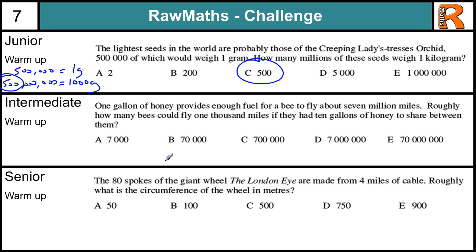Intermediate warm-up. If one gallon of honey provides one bee with the ability to fly 7,000,000 miles, then how many bees could fly 1,000 miles on one gallon? So if one bee can fly 7,000,000, how many bees can fly 1,000? Well, you should be able to see that 7,000 bees can fly 1,000 miles on one gallon. But we've got 10 gallons. So 10 times 7,000 is going to be 70,000.